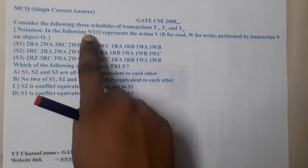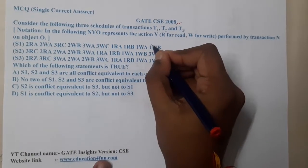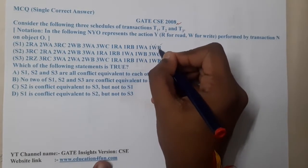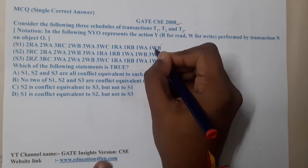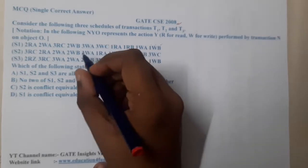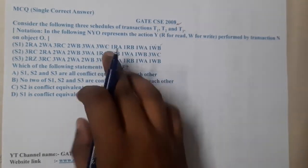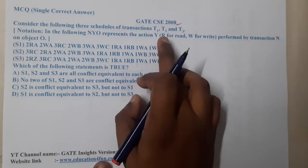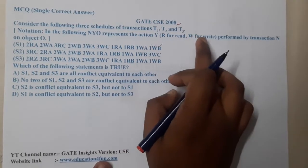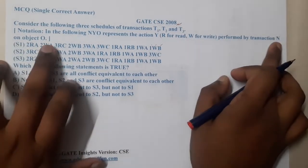Notations in the following: N, Y, O — they are assuming N as the transaction number, Y as the operation, and O as the operand. So N(Y)O represents the action Y — R for read and W for write — performed by transaction N on object O.